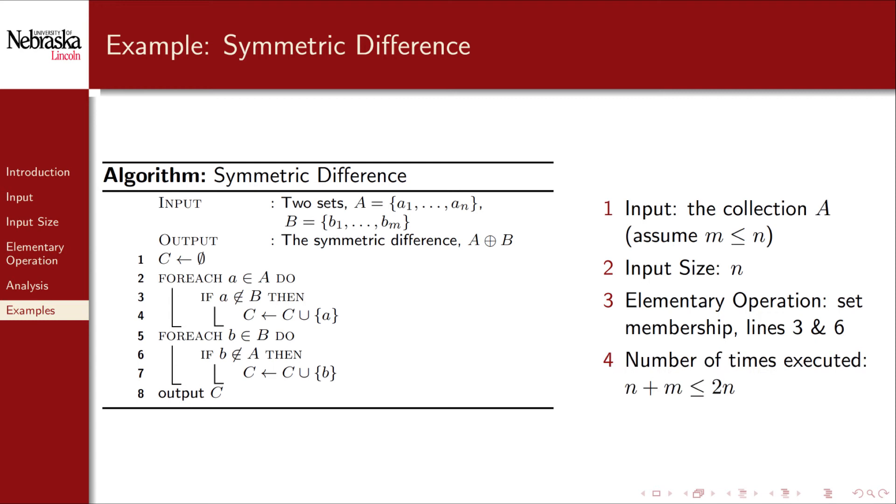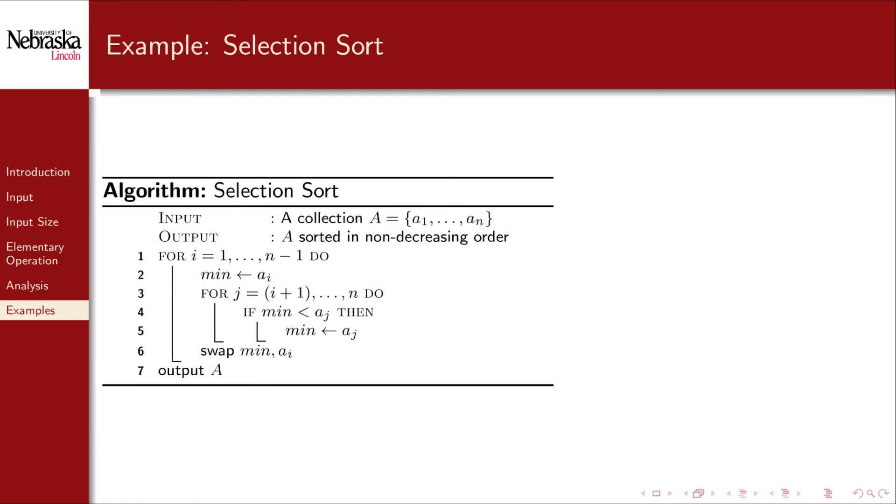To analyze how many times these are performed, we observed that the first loop runs n times, and the second loop runs m times. Thus the total is n plus m, but since we made the assumption that n is larger, we can place a worst case upper bound on the number of elementary operations at 2n.